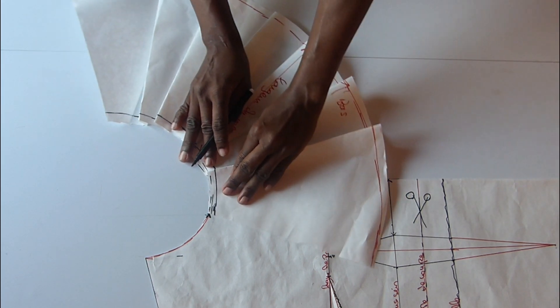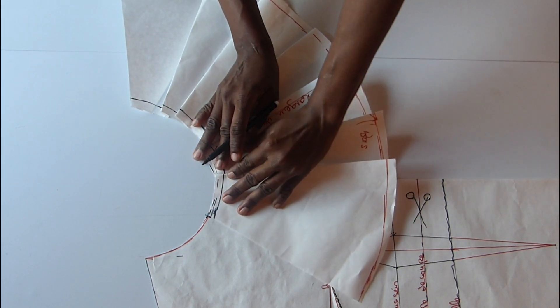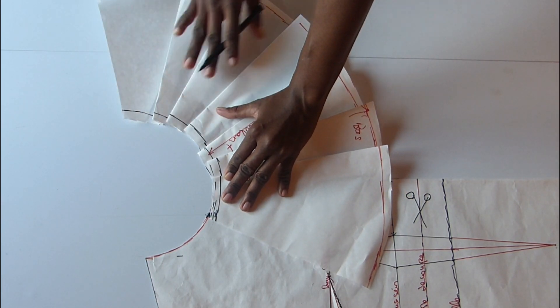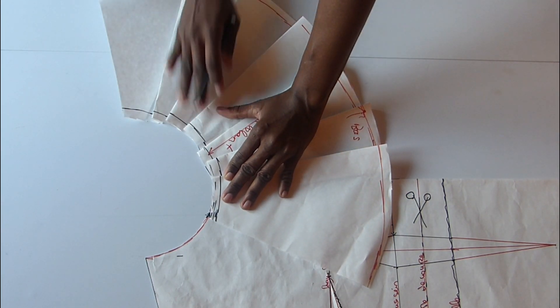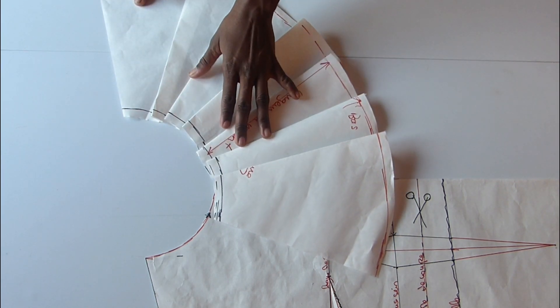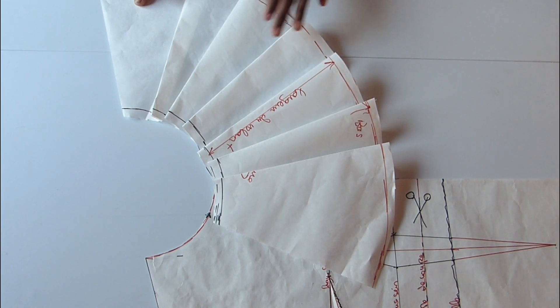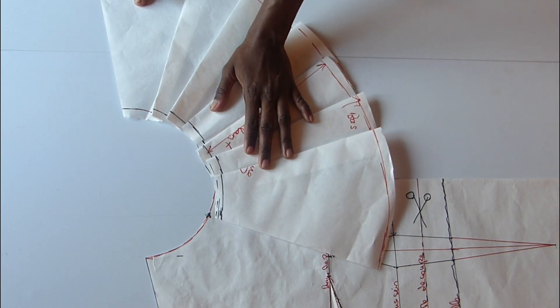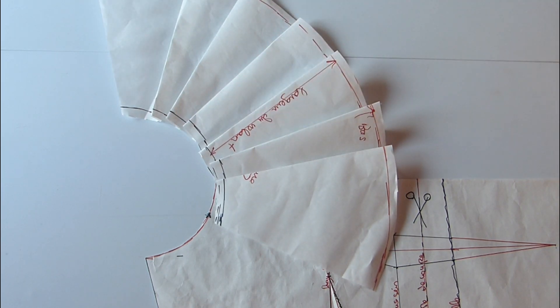I will make the pleats. I will position it at 4 cm from the middle of the front and form my pleats that I will come to position. This is a little bit about how it will be on the garment.